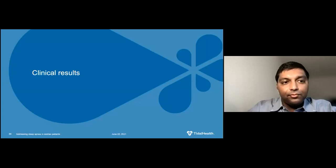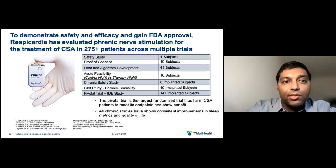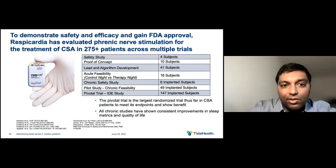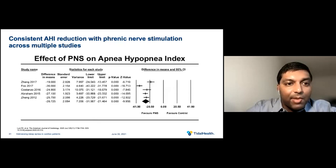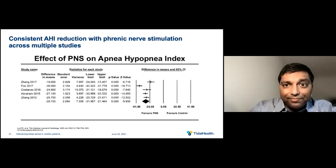To demonstrate safety and efficacy and gain FDA approval, Respicardia has evaluated phrenic nerve stimulation for treatment of CSA in 275-plus patients across multiple trials. By far the largest was the pivotal trial, which is the largest randomized trial, and it met all its endpoints and showed benefit. All chronic studies have shown consistent improvements in sleep metrics and quality of life. A schematic shows consistent AHI reduction with phrenic nerve stimulation across multiple studies, with all p-values significant and the difference in means ranging from 19 to 36 events per hour across all studies.